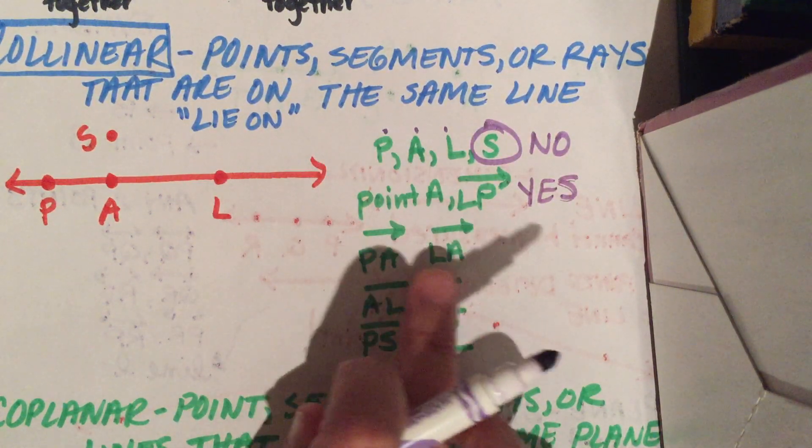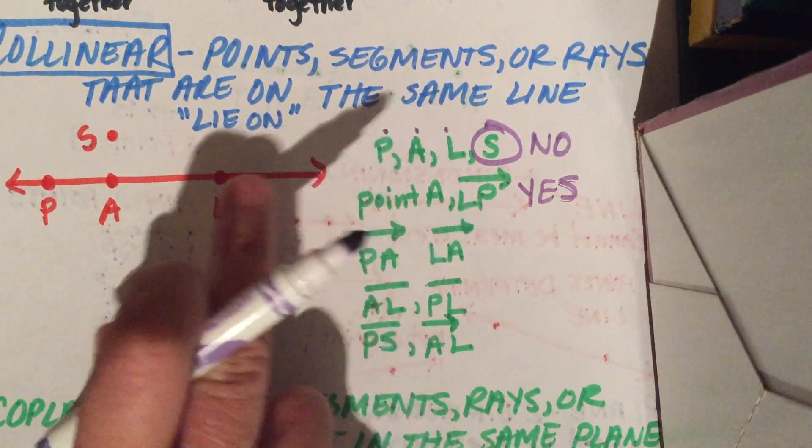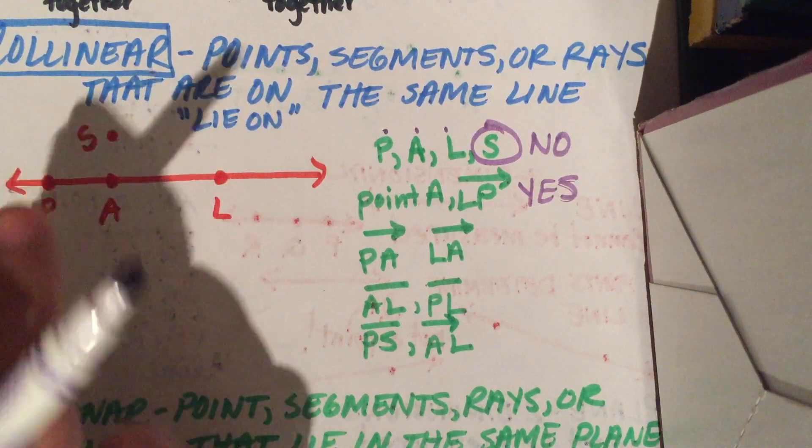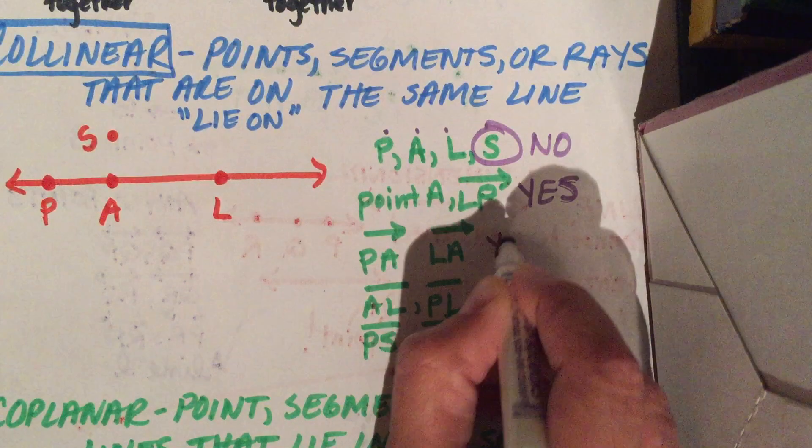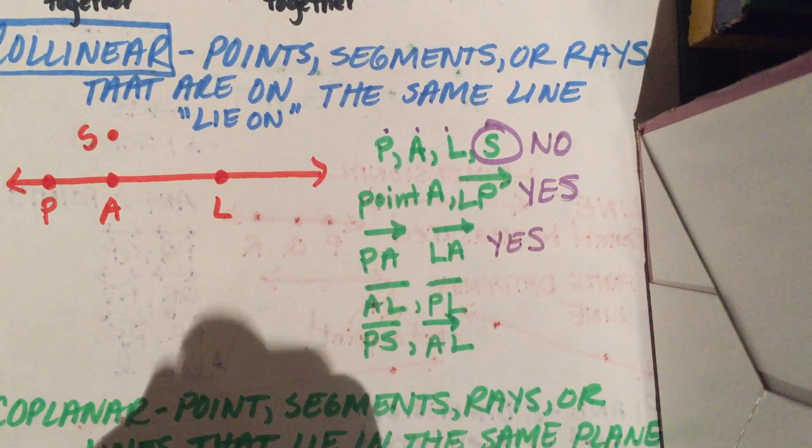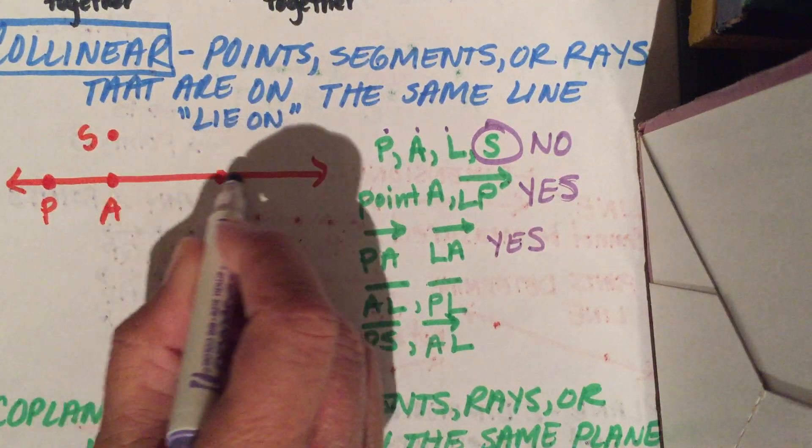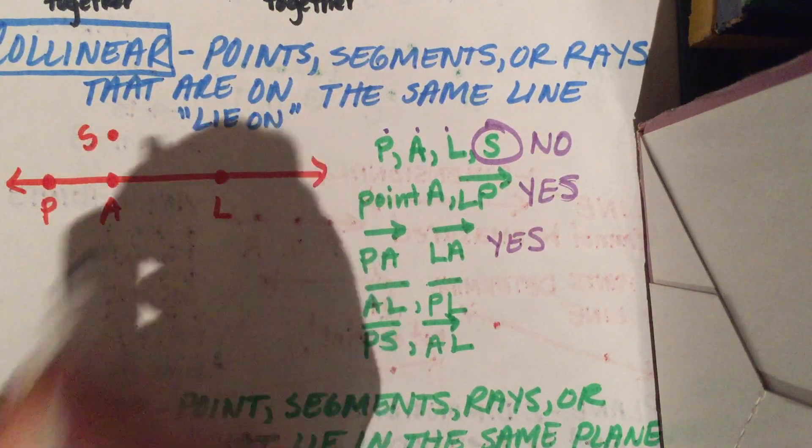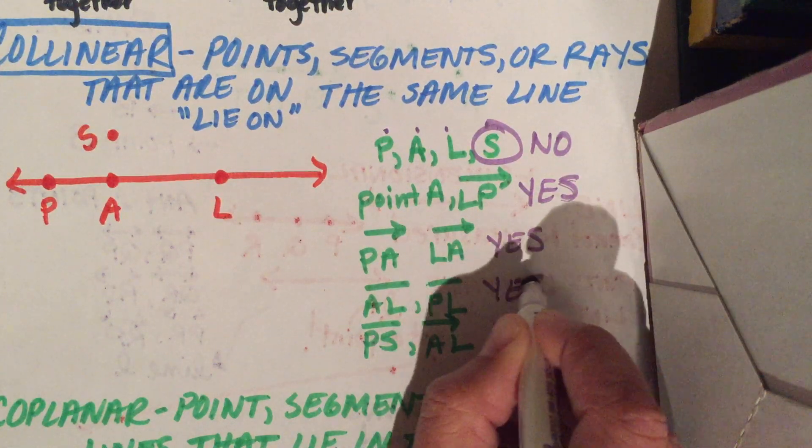How about ray PA and ray LA? I have ray P that goes through A and ray L that goes through A. Are they both on that line? Yes, they are. How about segment AL and segment PL? I've got segment AL and the larger segment PL. Are they on the same line? Yes, they are.